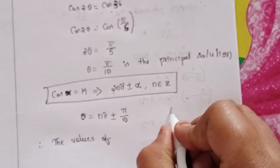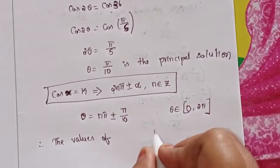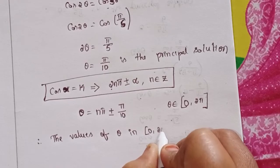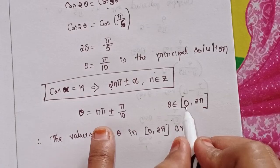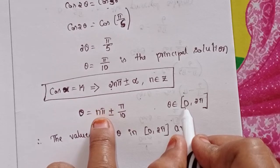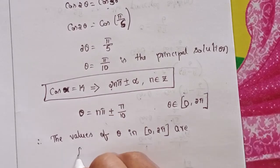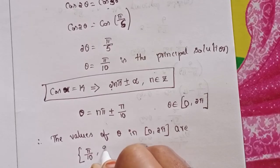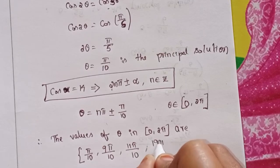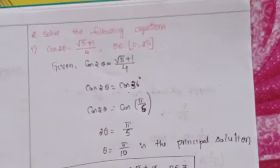θ belongs to 0 to 2π. So the values of θ in 0 to 2π: start with n = 0. Substituting n = 0, the nπ term becomes 0, so θ = π/10. This is the first solution for problem one.